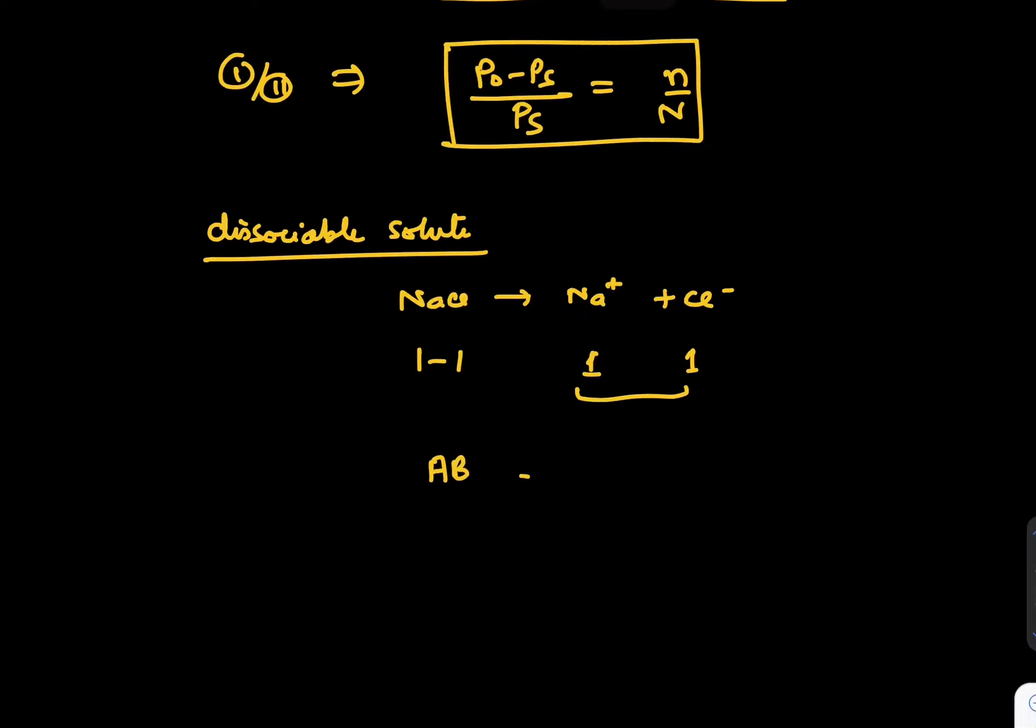If it is some AB kind of thing which is breaking as A plus and B minus, you write 1 minus alpha, alpha, alpha, where alpha is degree of dissociation. Final number of particles in this case is 1 minus alpha plus alpha plus alpha equals 1 plus alpha. This is known as I or Van't Hoff factor.